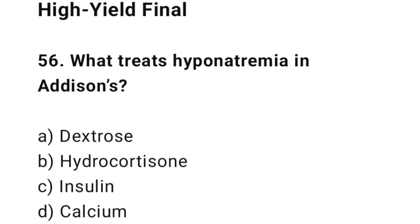Question number 56: What treats hyponatremia in Addison's disease? The correct answer is B, hydrocortisone.